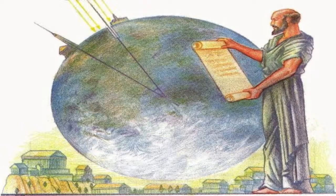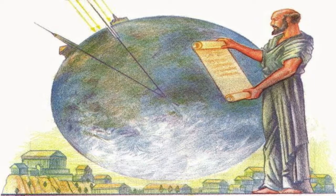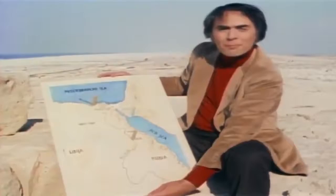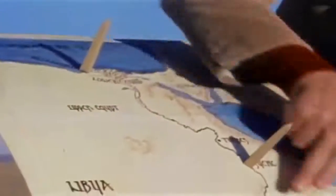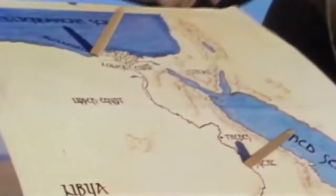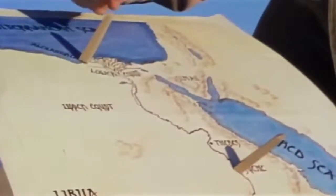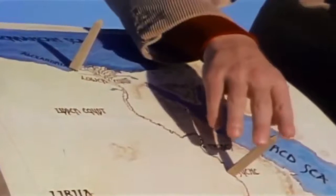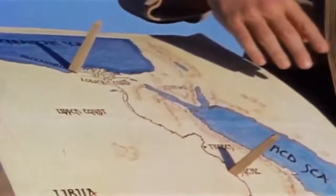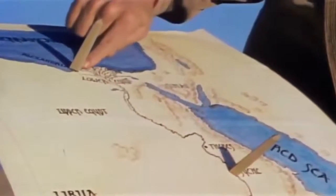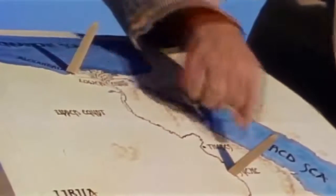One of the most common alleged proofs quoted for the Spherical Earth Theory is the Eratosthenes Sticks and Shadows experiment. Many people may remember NASA spokesman Carl Sagan presenting this experiment by using a map of Egypt with two obelisks attached and showing their resulting shadows.